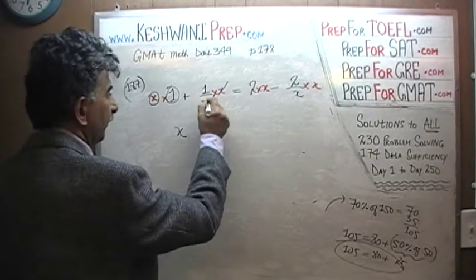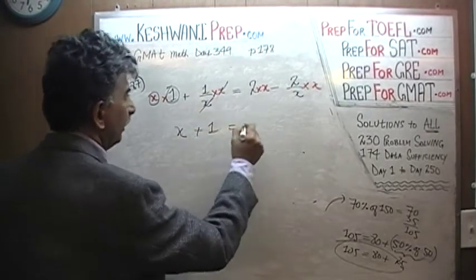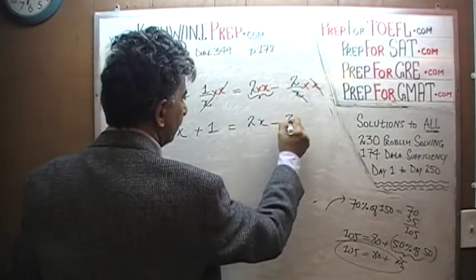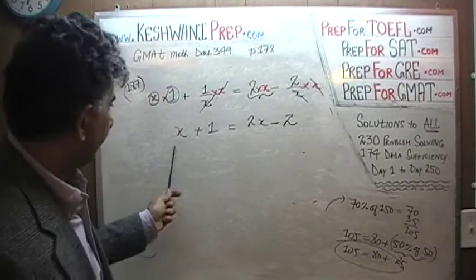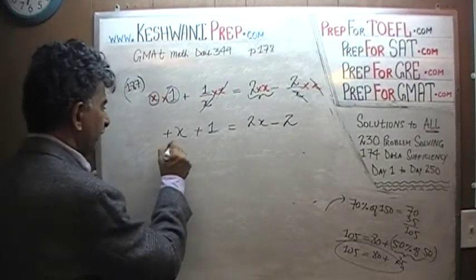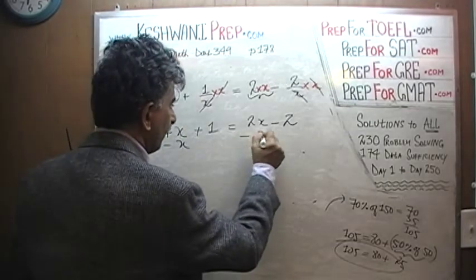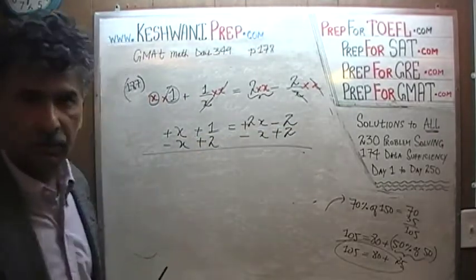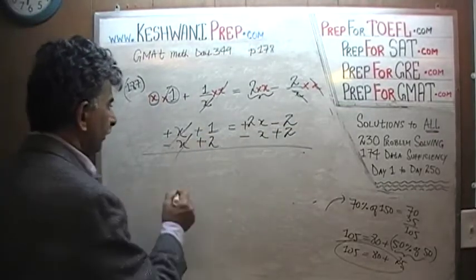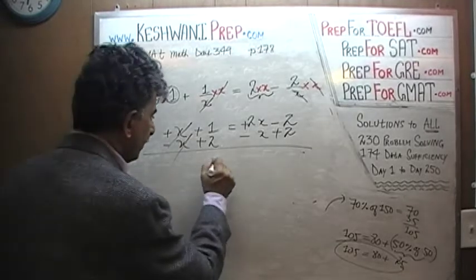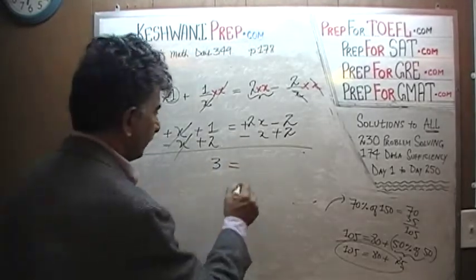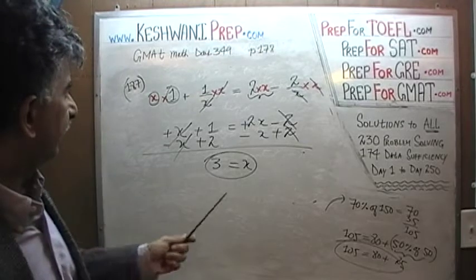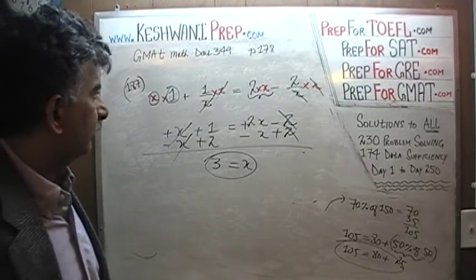After multiplying through, we get: x + 1 = 2x − 2. Bringing x terms to one side and constants to the other: subtract x from both sides and add 2 to both sides. Positive x and negative x drop out, 1 plus 2 is 3, and 2x minus x is x. Therefore x equals 3.